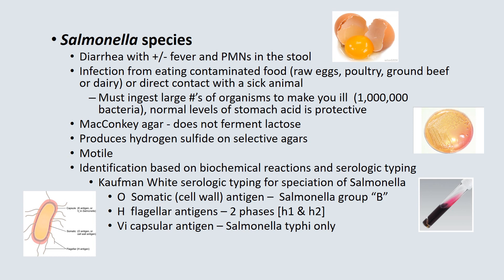Salmonella species causes diarrhea with fever and polymorphonuclear cells in the stool, usually acquired from contaminated food — raw eggs, poultry, ground beef, or dairy — or from direct contact with a sick animal. To get sick with this organism, you must ingest a large number of organisms. A normal level of stomach acid can often be protective against this infection.